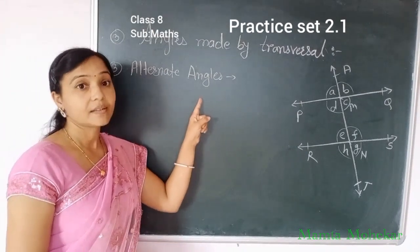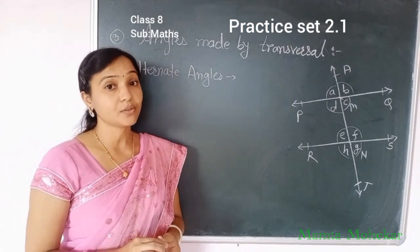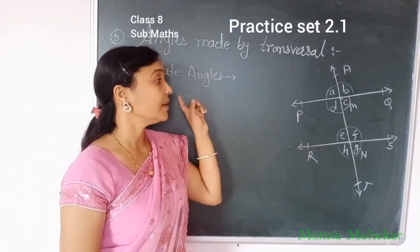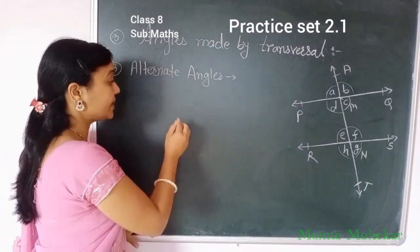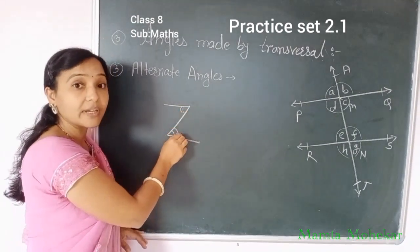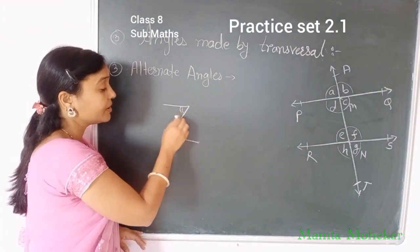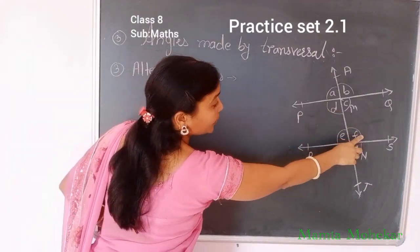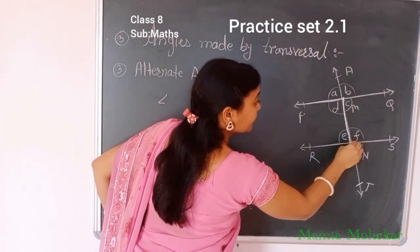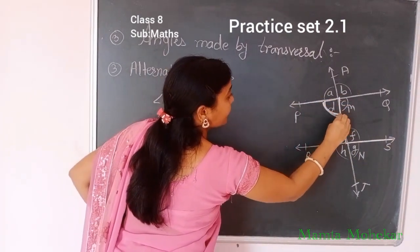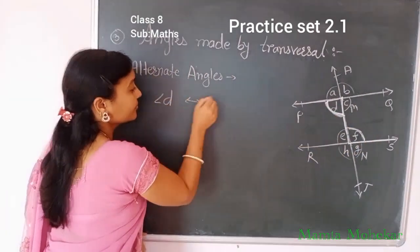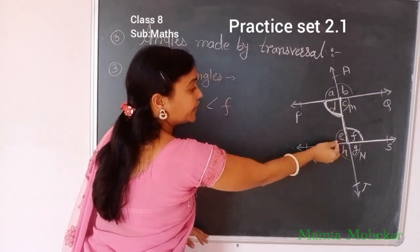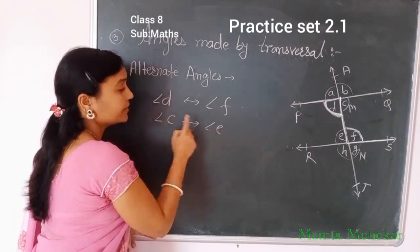The next type is alternate angles. A pair of angles which are on opposite sides of the transversal and whose arms point in opposite directions — that pair is called alternate angles. Simply remember the Z shape: the angles which are in the Z shape are called alternate angles. For example, angle D alternate to angle F, and angle B alternate to angle F, as these are in a Z shape. Another pair: angle C alternate to angle E.